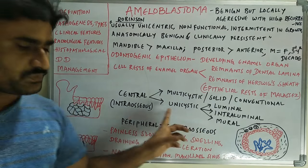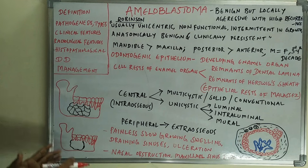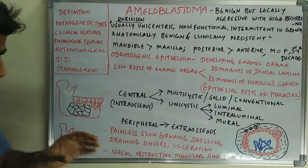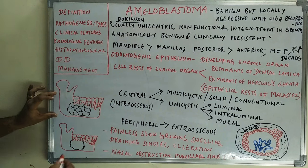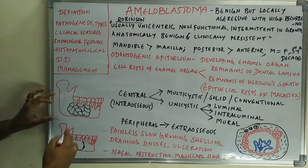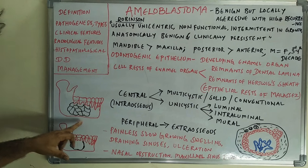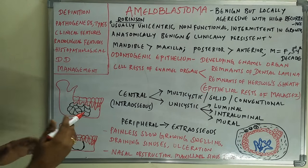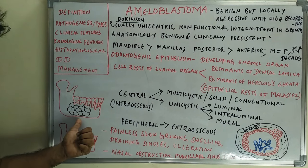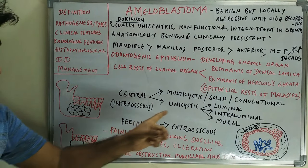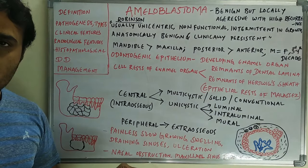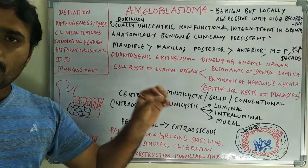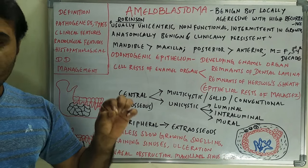Multicystic means there is an appearance of multiple cysts with lacunae. In the diagrams you can see amyloblastoma of the mandibular angle region and body region with small spaces that are lacunae giving a multicystic appearance. This is also called solid or conventional amyloblastoma — the most commonly occurring type.